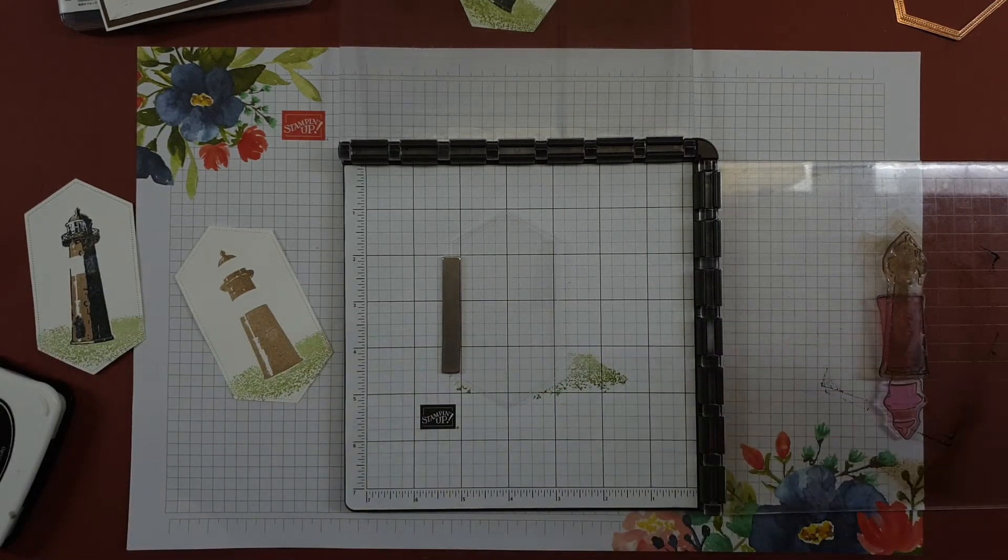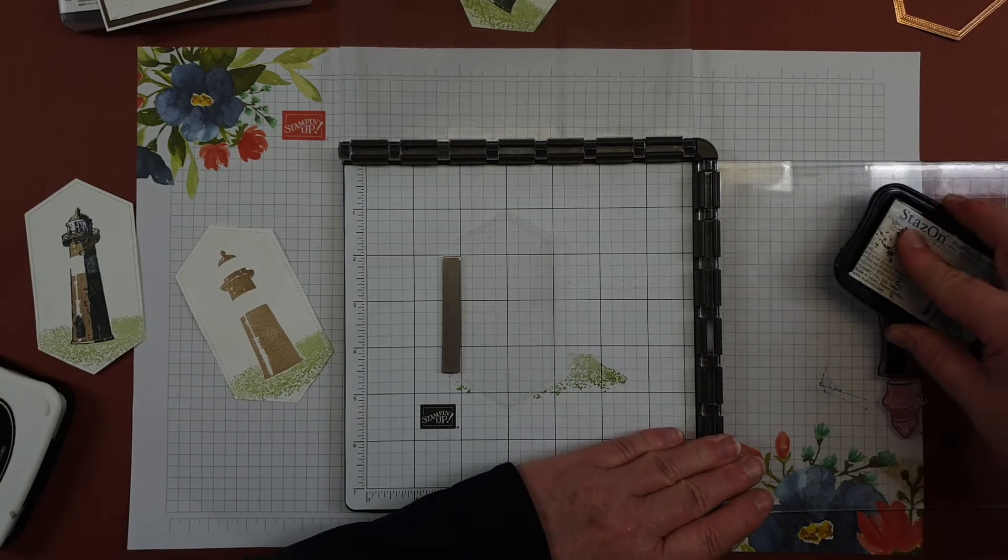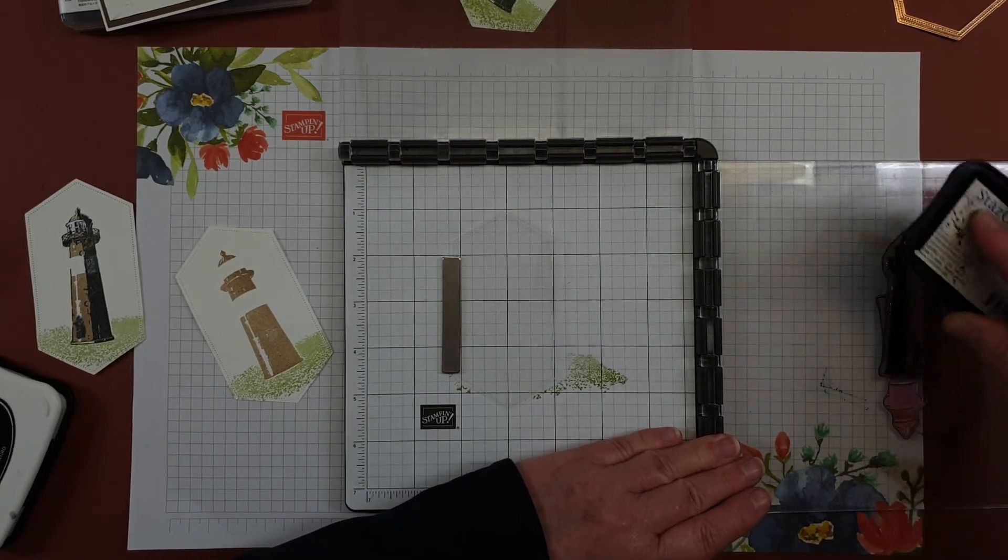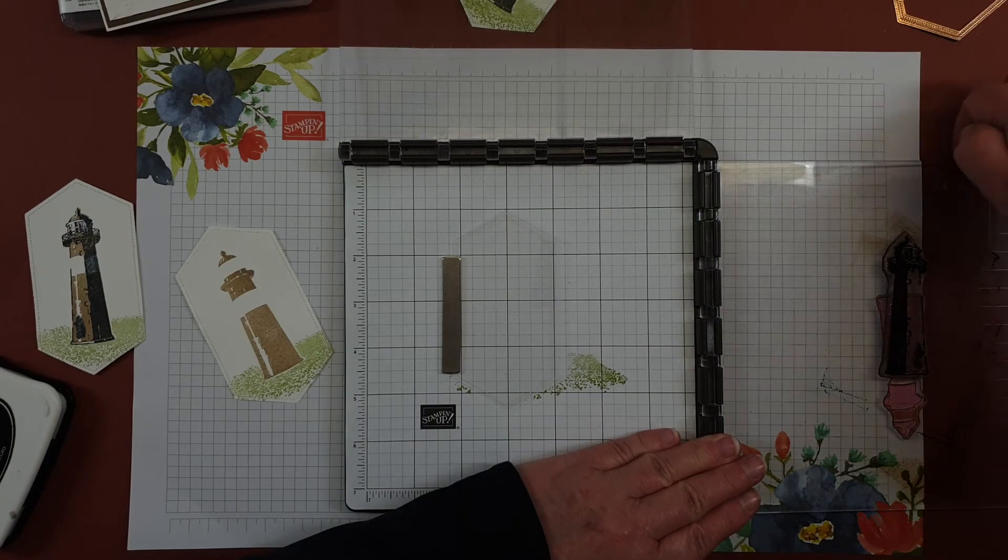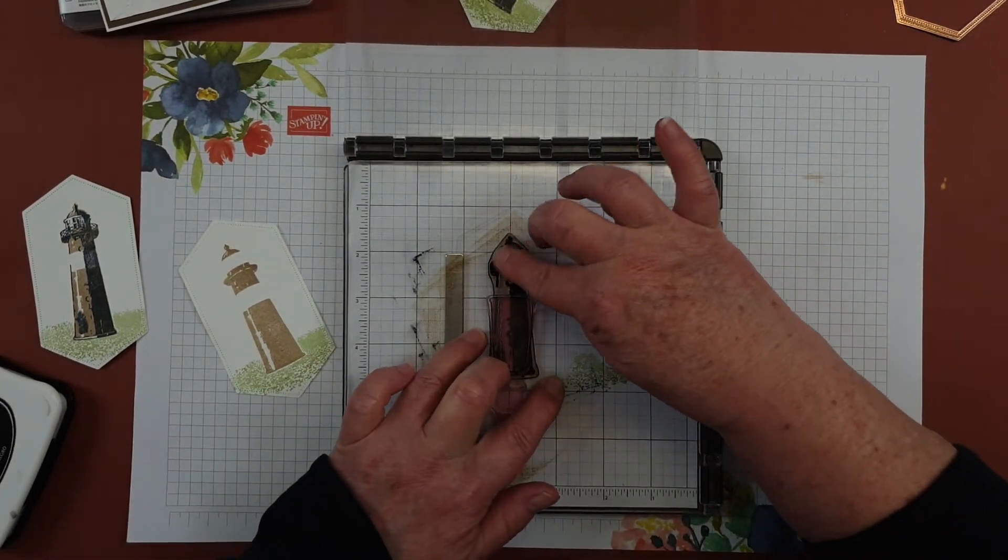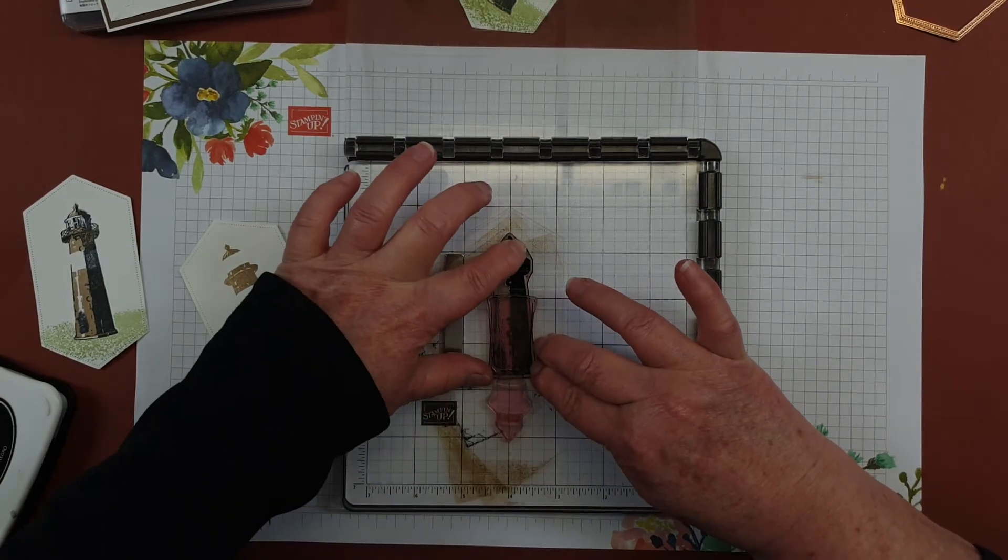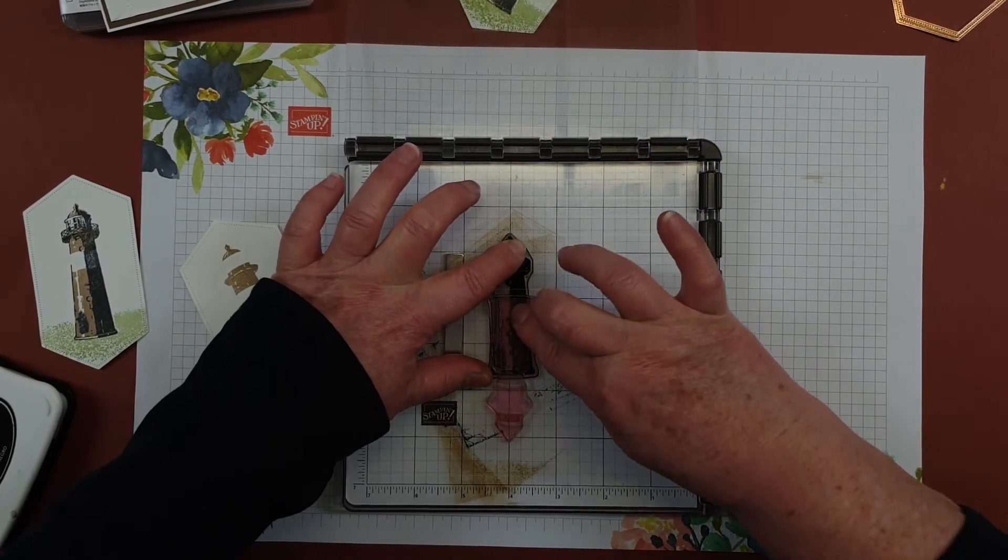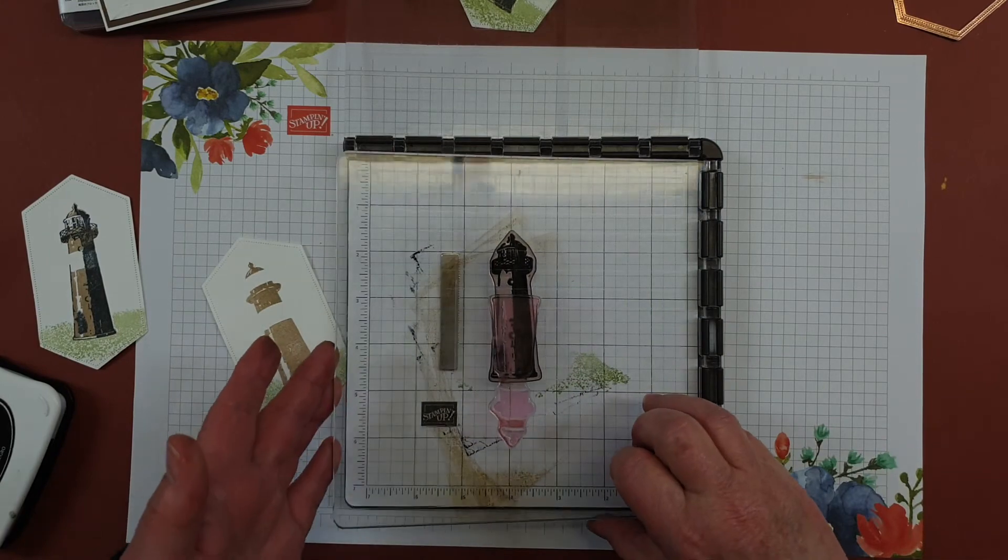So I'm going to ink up the other side of the lamp with the black stays-on ink and put that onto the window sheet, just give that a good push down.